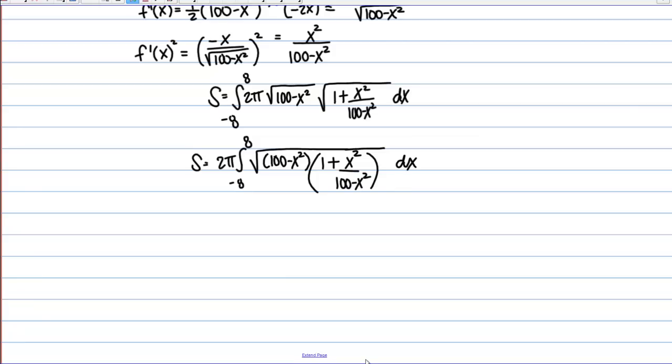And then under that root I can distribute this quantity 100 minus X squared to both the 1 and to this fraction here. So if I do that, I'm going to have the square root. If I multiply this 100 minus X squared by 1, I just get of course 100 minus X squared.